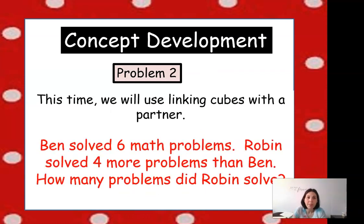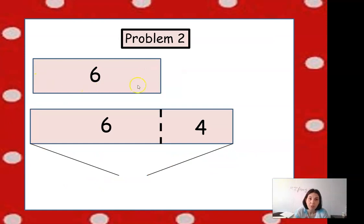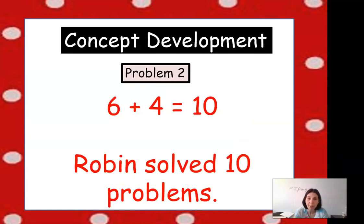Let's look at another problem. Ben solved 6 math problems. Robin solved 4 more problems than Ben. How many problems did Robin solve? So Ben solved 6 problems, and Robin solved 4 more problems than Ben. So if Ben solved 6, then we would need to show that Robin solved 6, and then she solved 4 more. And now we need to figure out what 6 and 4 equals. 10. 6 plus 4 equals 10. So Robin solved 10 problems.